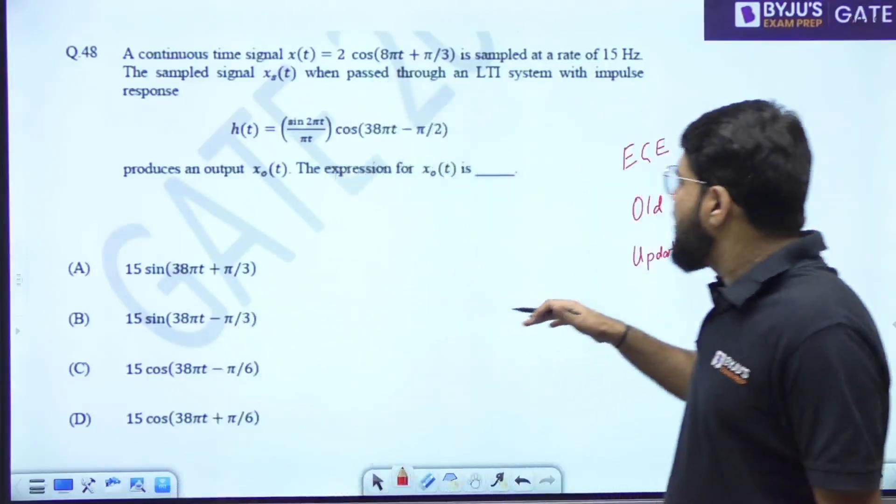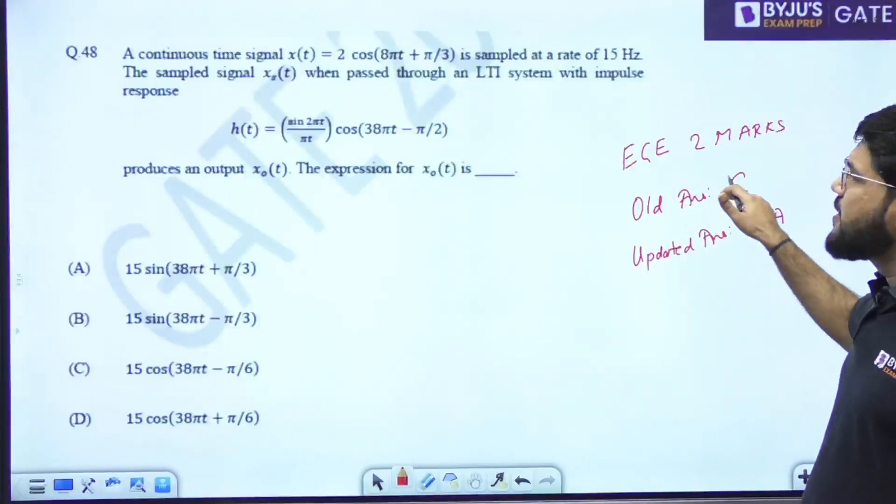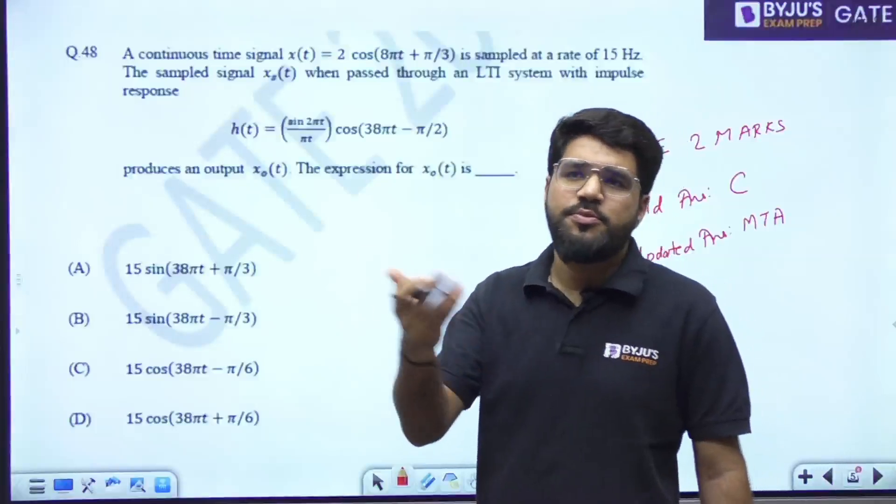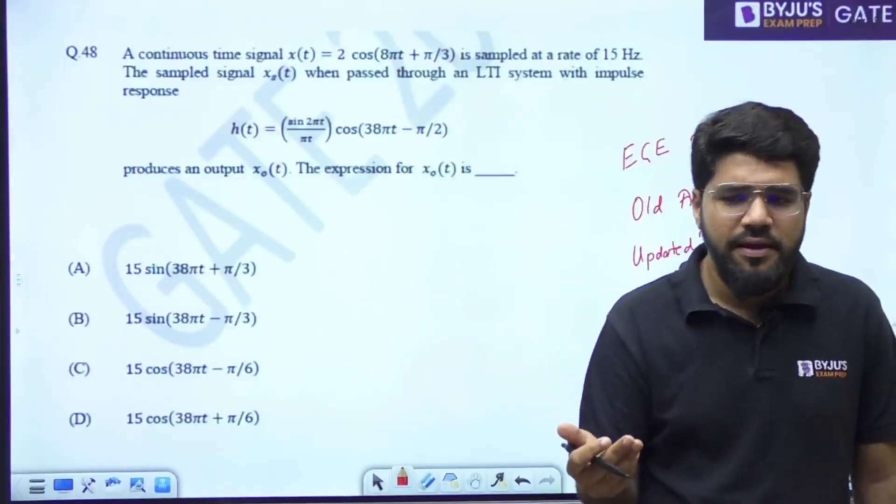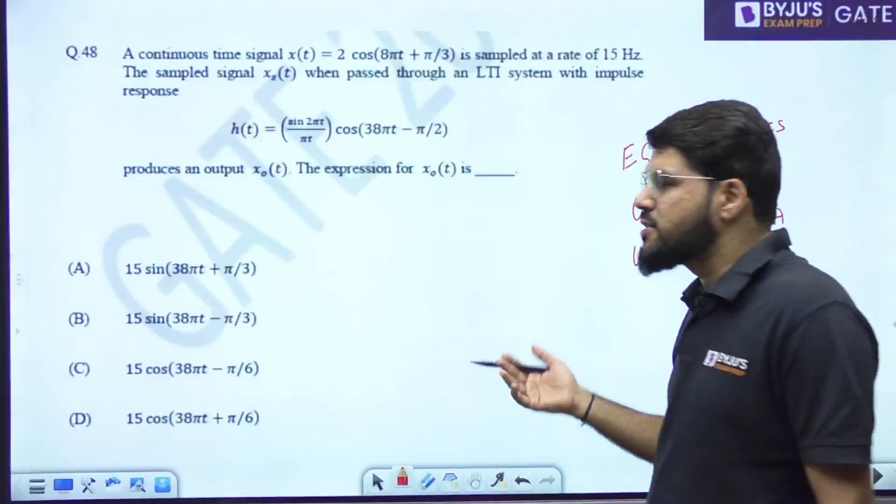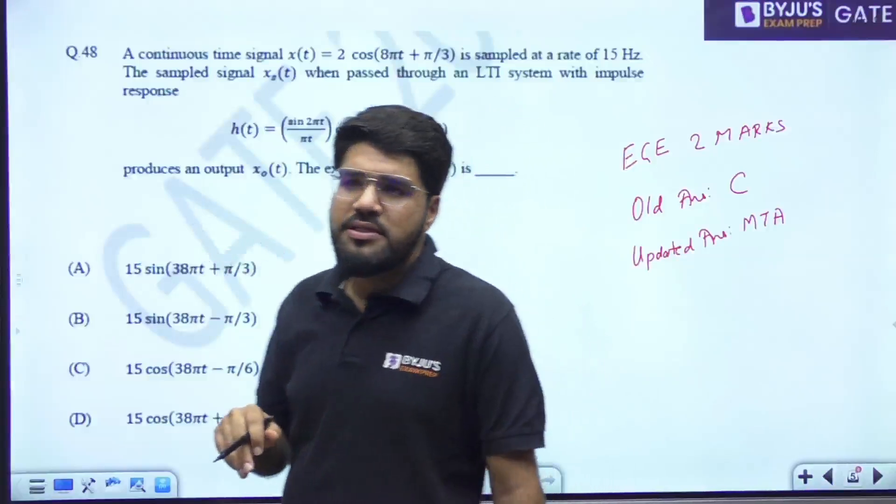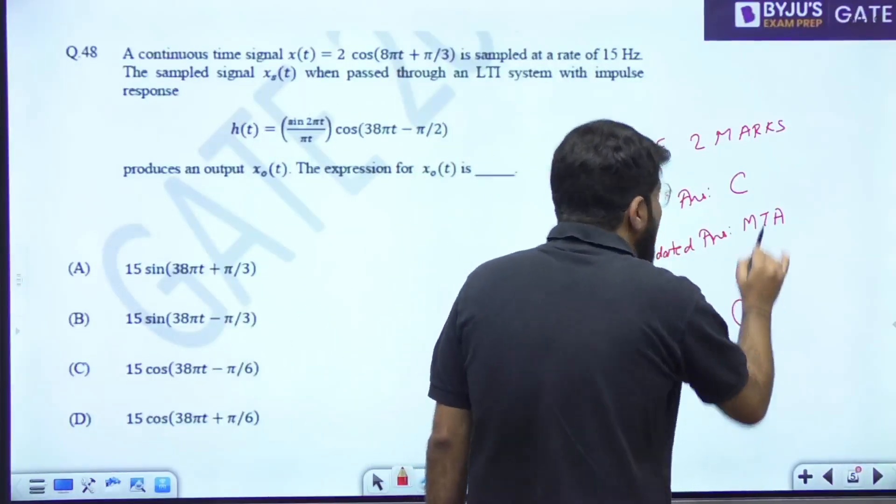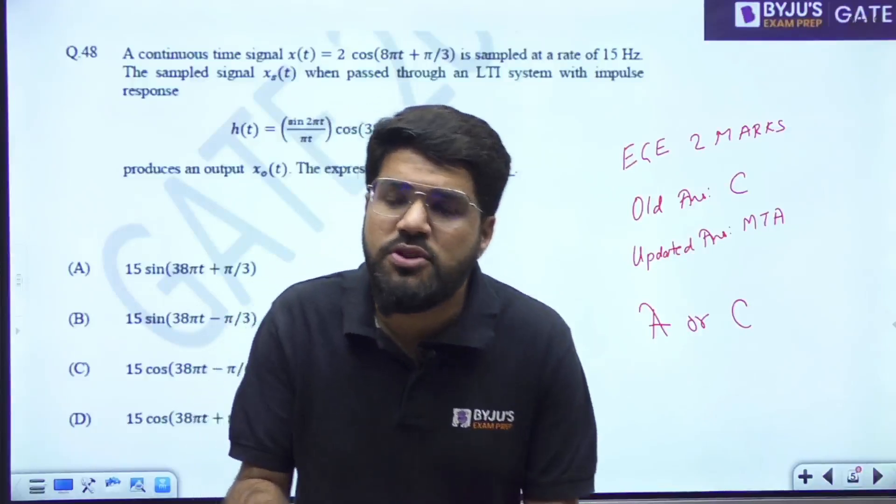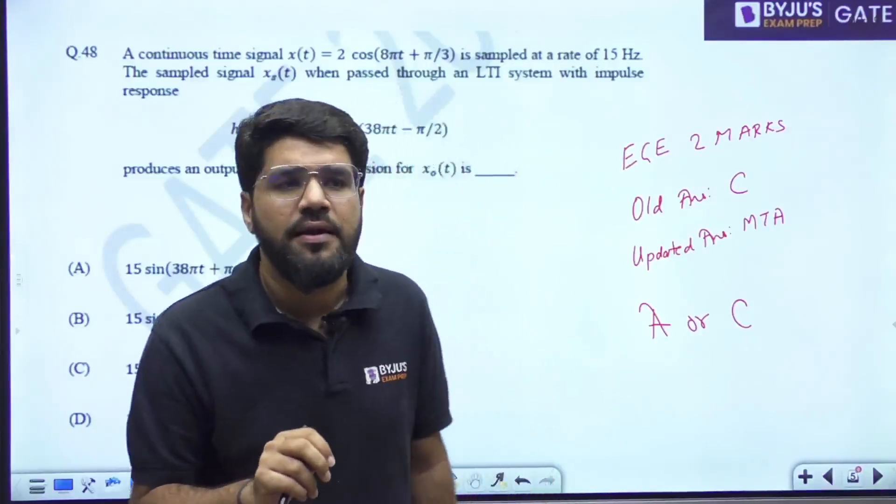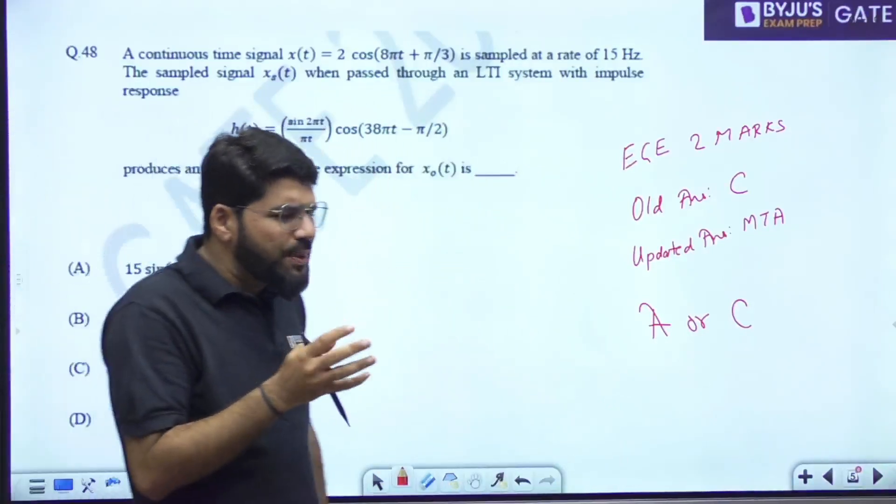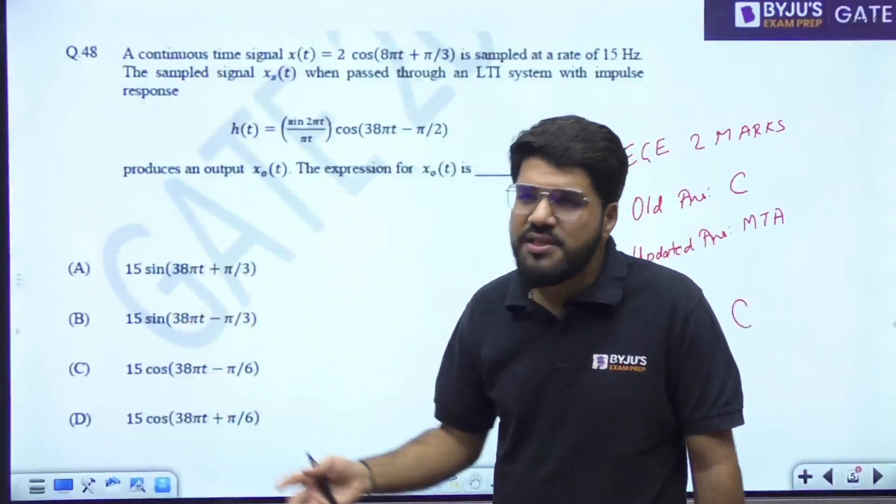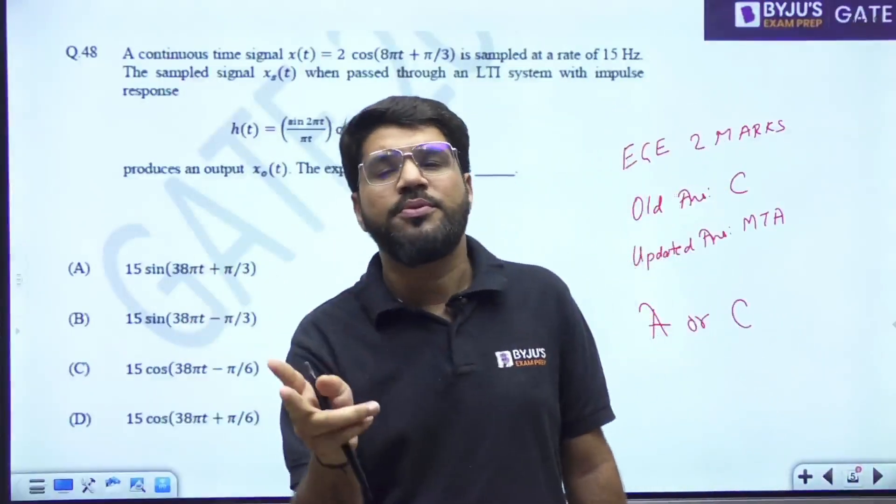Now the logic here was option number C is the original answer given in question number 48. But because of the simple phase difference between cos theta and sine theta 90 degrees, we know that sine(90-theta) is cos theta. Due to that, A will also match. So the possible answer for this is A or C, but they have given marks to all because it is an MCQ question. Two cannot be correct. But as far as my memory is correct, I have seen such cases in previous years. When both options can be correct, they don't take it as MSQ, it is MCQ only.